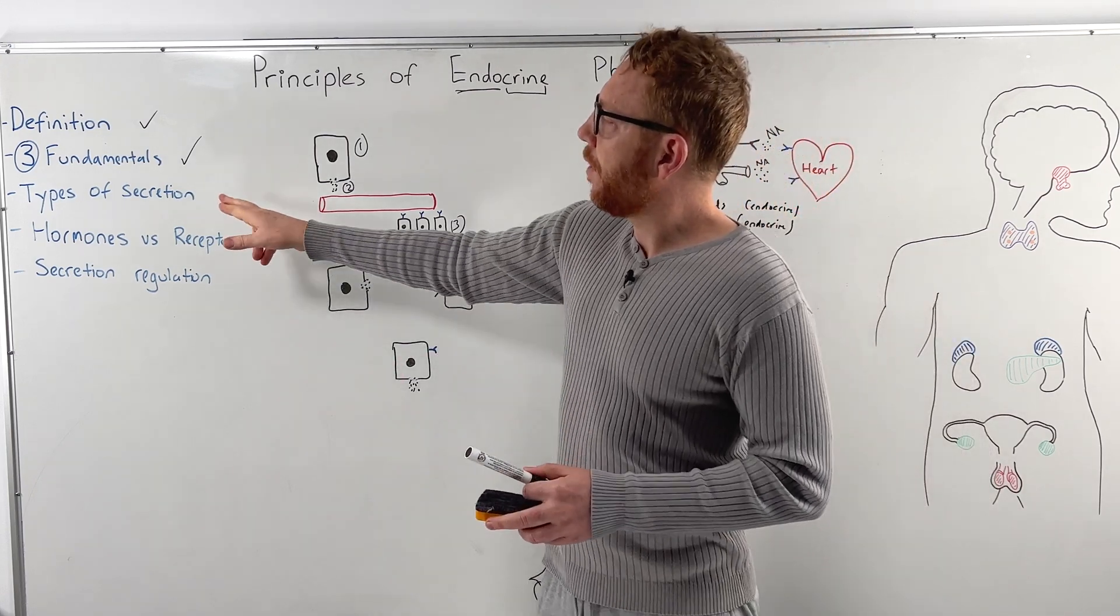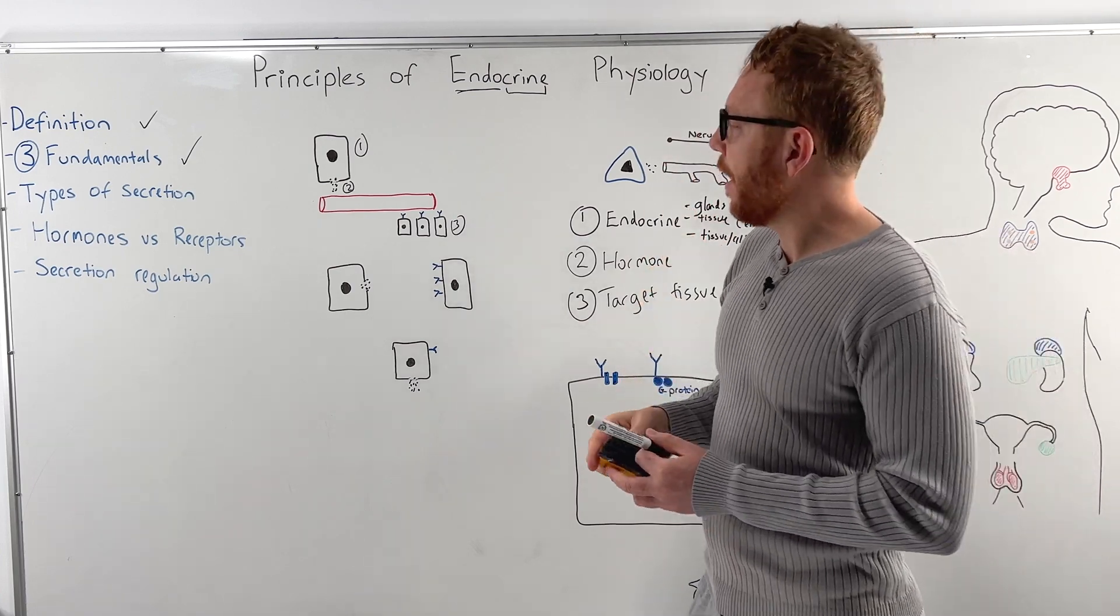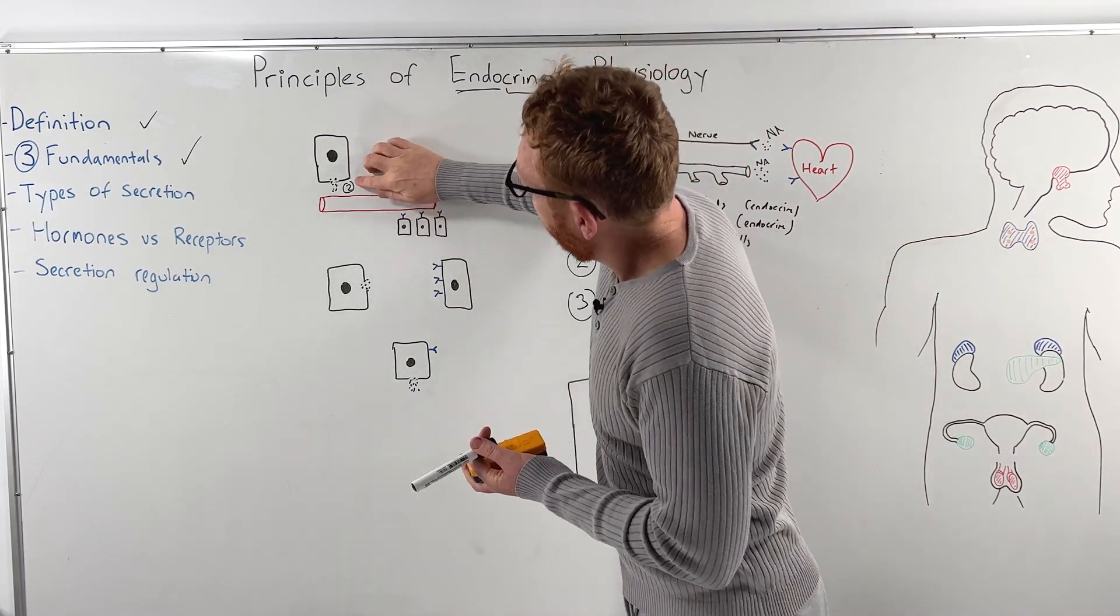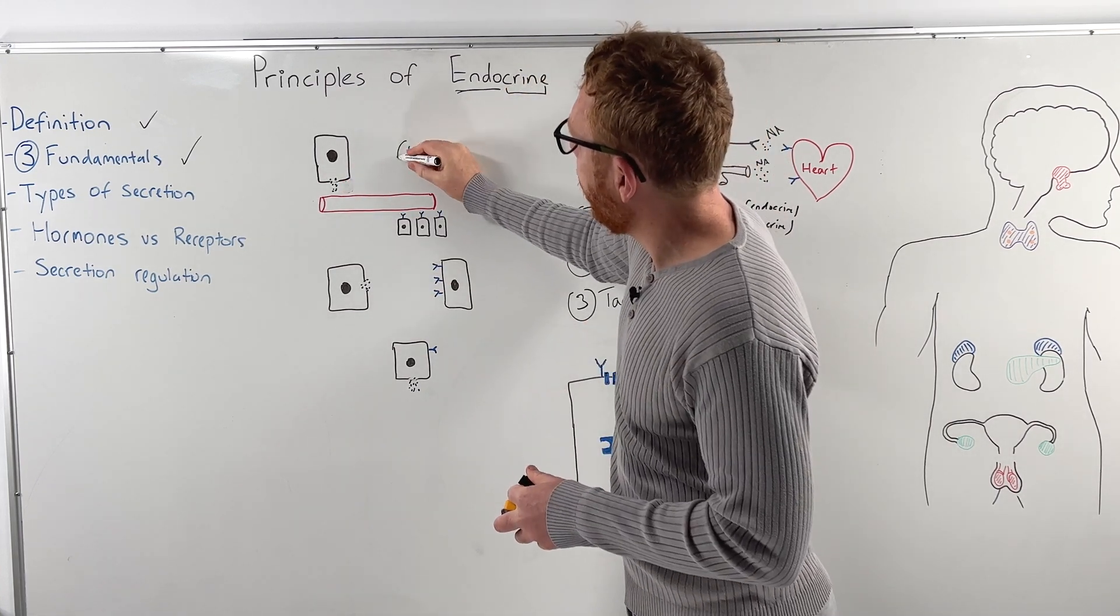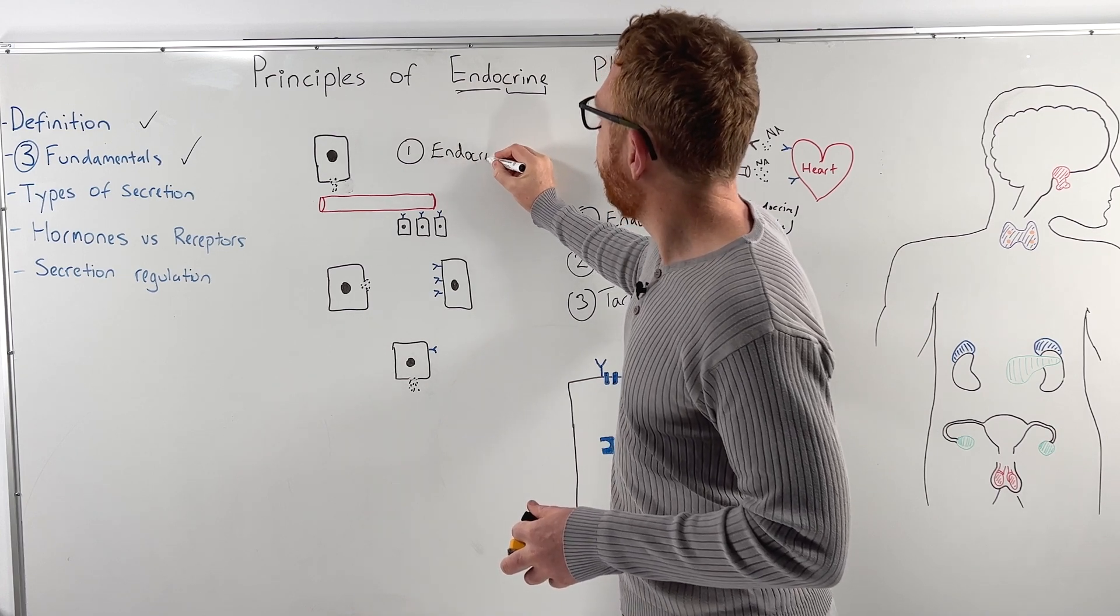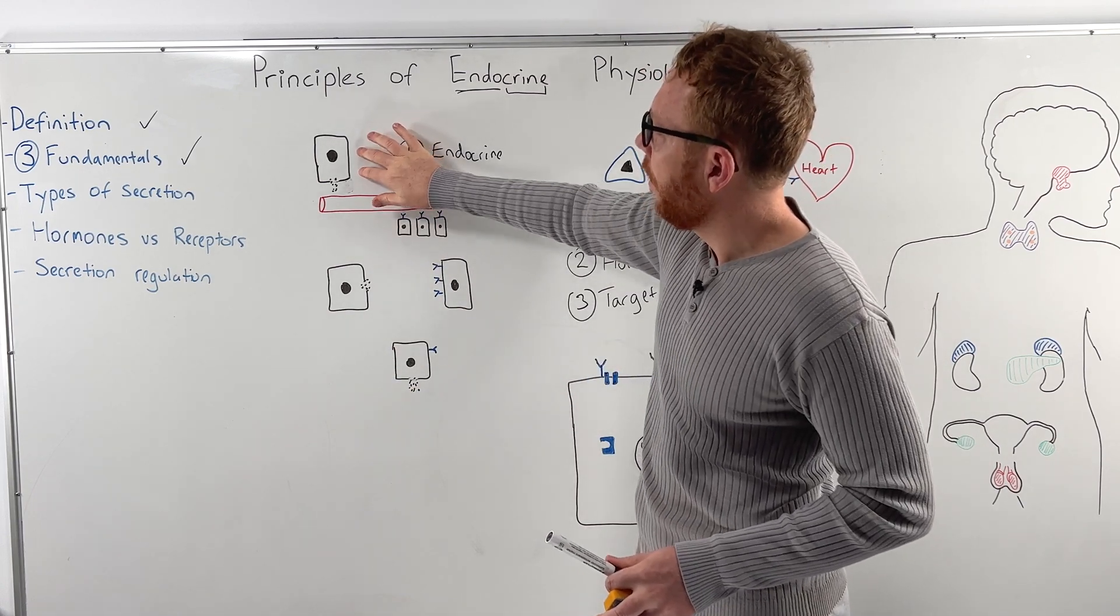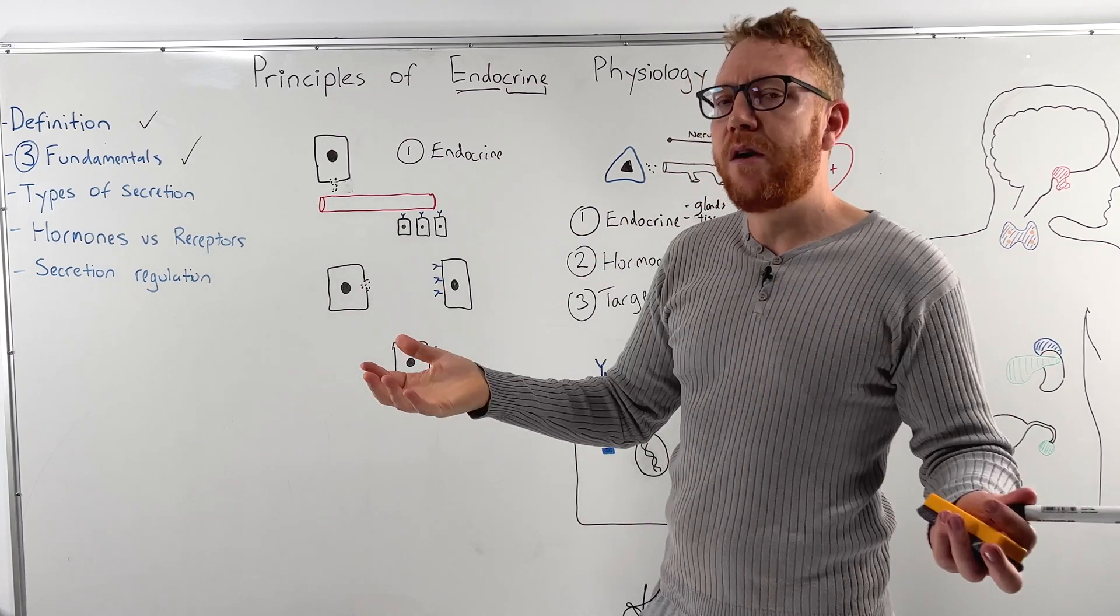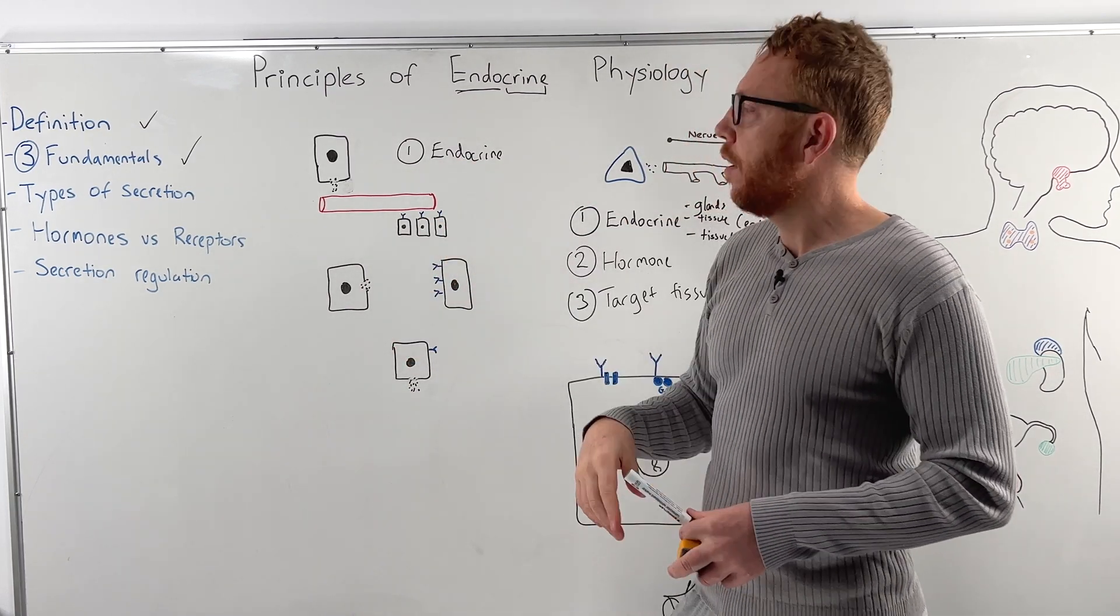Now we move to the types of secretion of these endocrine tissue. So there's three main types here. So the first one is this one here. So I'll put one here and it is the true endocrine secretion. So the true endocrine secretion is the endocrine cell releases a hormone into blood. It goes into the blood, which means it can go everywhere in the body and then act on the target organ. That is a classic endocrine secretion.